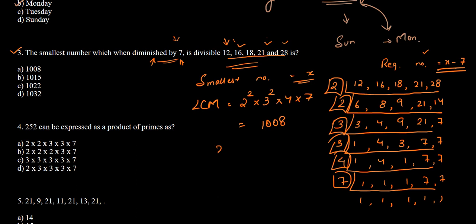Since x − 7 = 1008, we get x = 1008 + 7 = 1015. So 1015 is the smallest number which when diminished by 7 is divisible by all five numbers. The answer is 1015, which is option B.